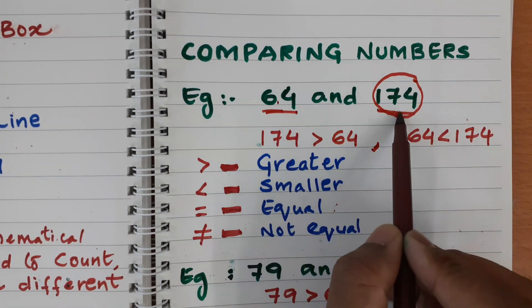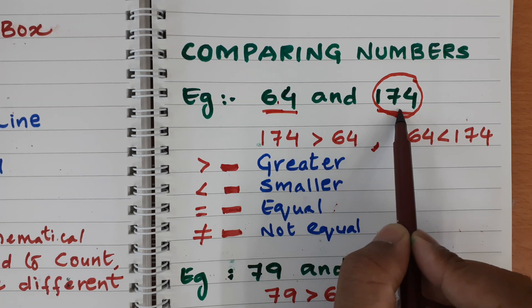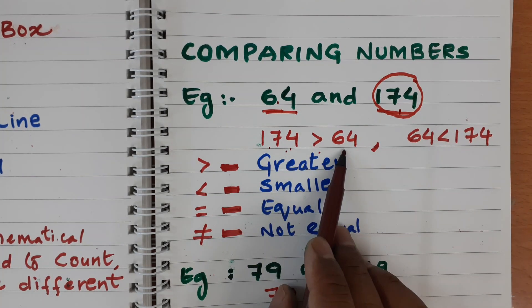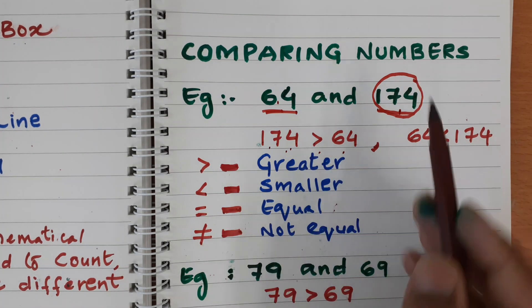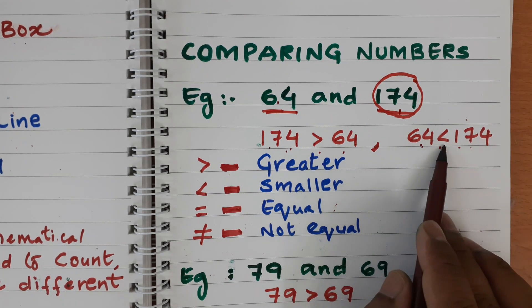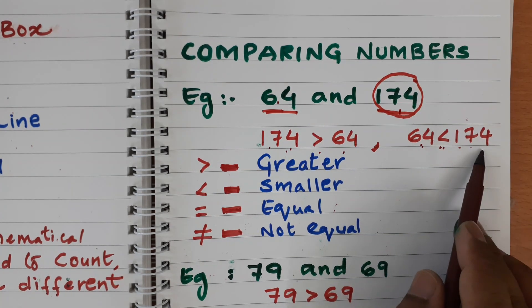When you are comparing two digit and three digit number, three digit number is bigger. Here 174 greater than 64, or you can write in another way like this: 64 smaller than 174, 64 less than 174.